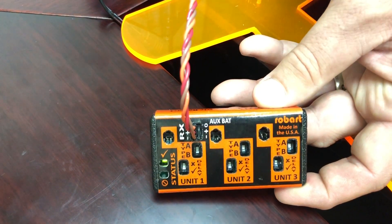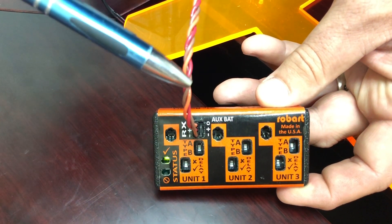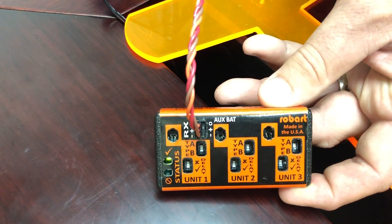If you are going to run your retracts off of the power from your receiver, then you need to have your jumper plugged into the zero and the plus.